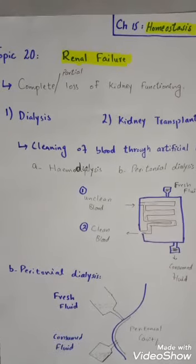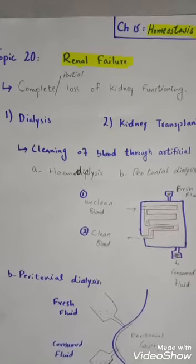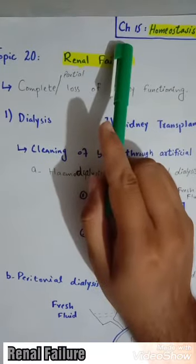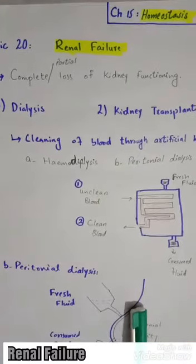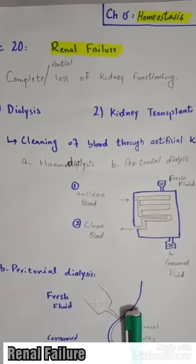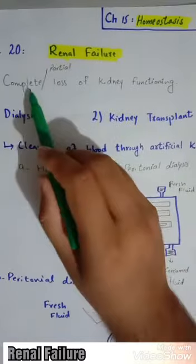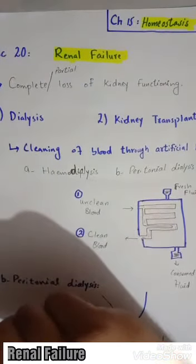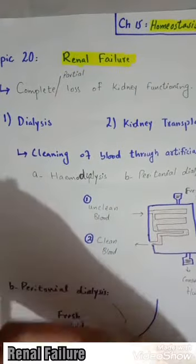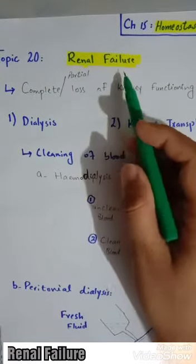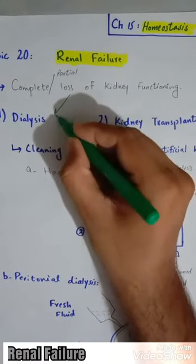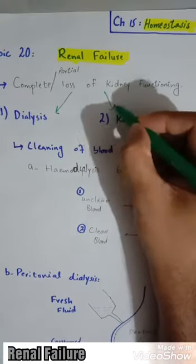Assalamu alaikum students, today our topic is renal failure — topic 20, chapter 15, homeostasis. Renal failure is known as complete or partial loss of kidney functioning, when our kidney functioning is completely finished or partially defective.